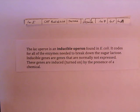The lac operon is an inducible operon found in E. coli cells. It codes for all the enzymes needed to break down the sugar lactose. Inducible genes and operons are genes that are normally not expressed. These genes are induced, or turned on, by the presence of a chemical.